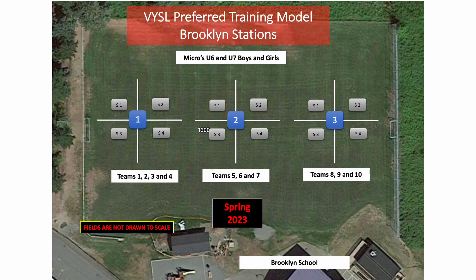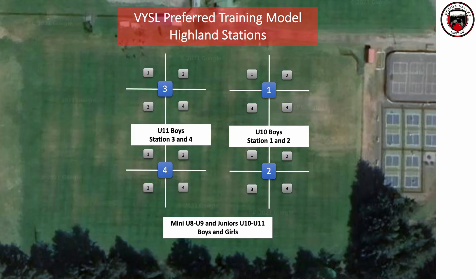For this year, up at Brooklyn we'll have divisions with 10, so there will be two groups of three and a group of four set up for the micros divisions. The other divisions will be up at Highland. We'll have individual maps on each night to show where you should go, and those will be in groups of four. There will be lots of space, and we may introduce using the bigger goals this year.